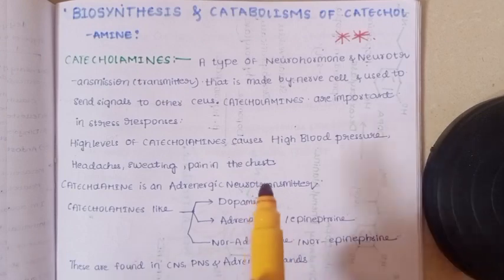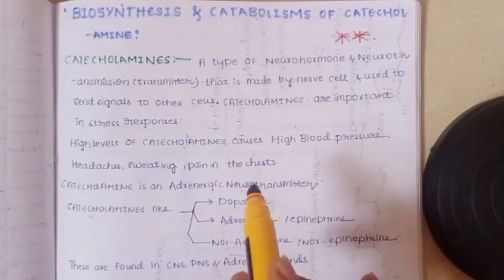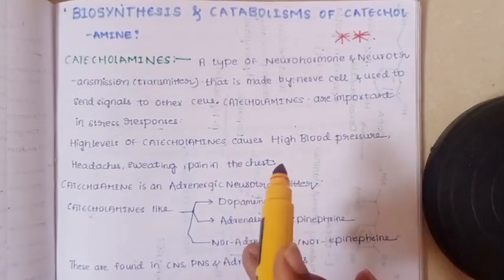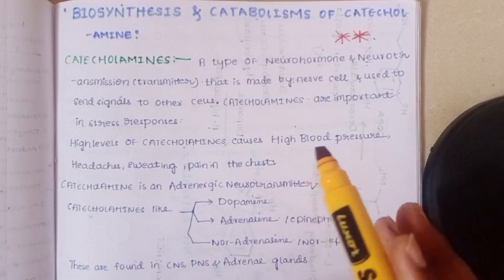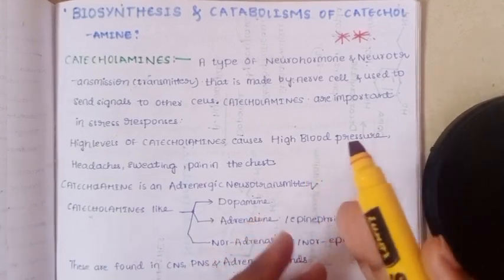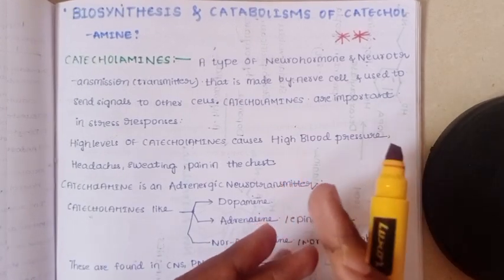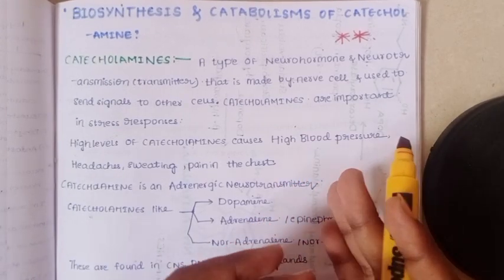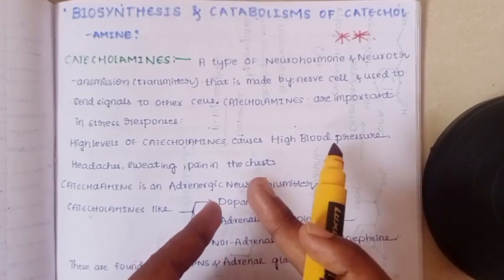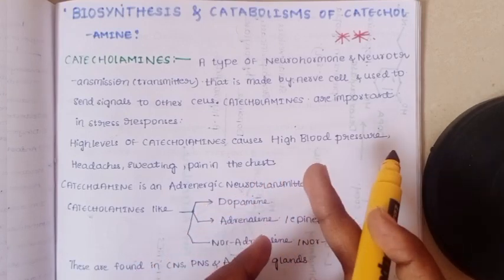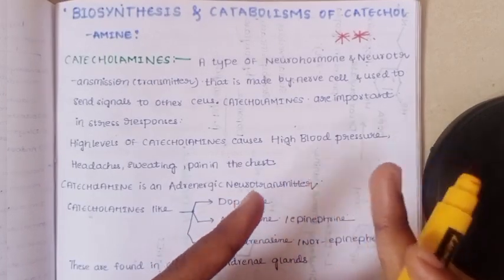First: Biosynthesis and Catabolism of Catecholamines. So what is metabolism? Metabolism is the combination of both catabolism and anabolism. These two together make up metabolism.